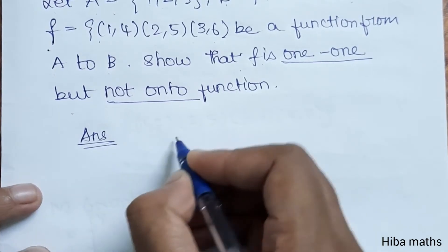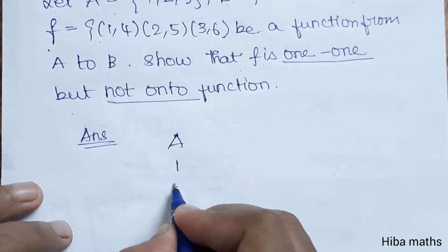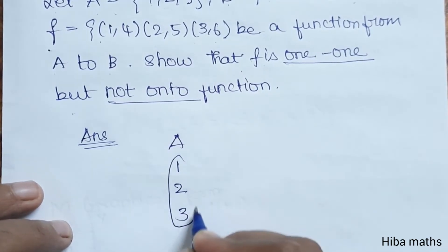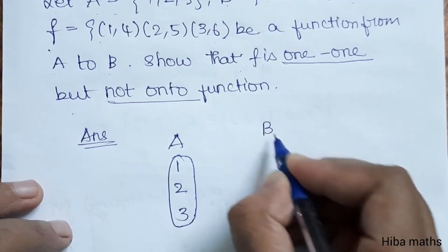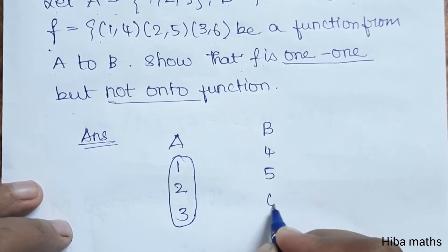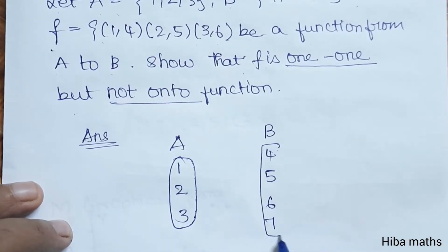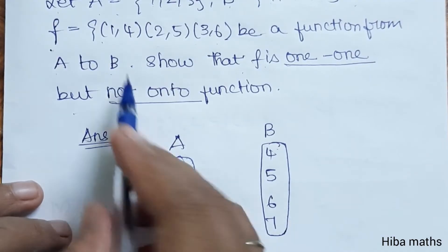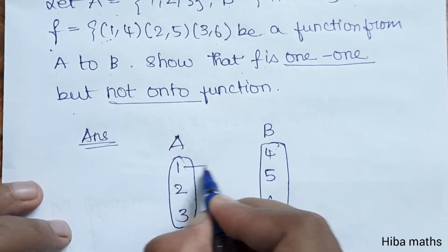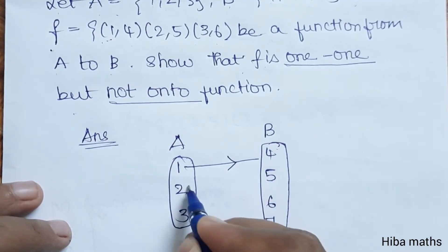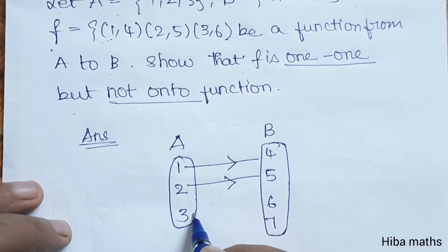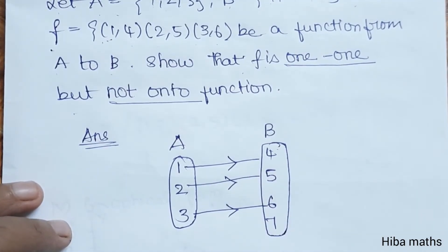Let us draw the diagram. Set A: 1, 2, 3. Set B: 4, 5, 6, and 7. The function shows 1 maps to 4, 2 maps to 5, 3 maps to 6. Correct?